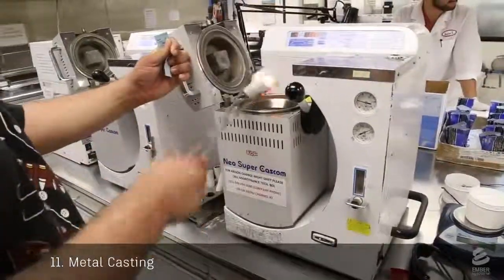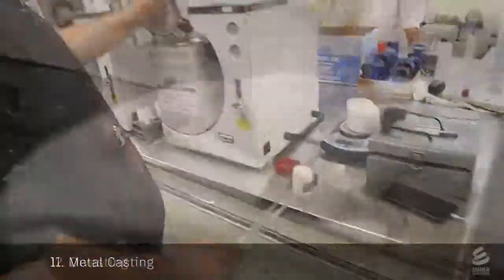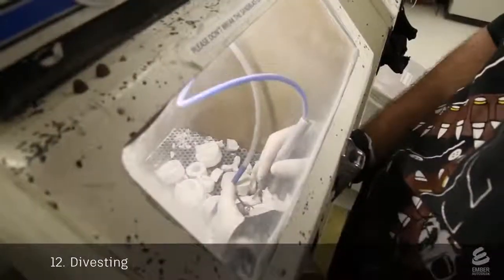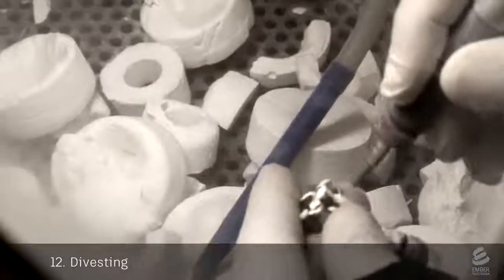The casting is removed from the machine and left to cool. In a process called divesting, a technician breaks apart the investment with a hammer and uses an air gun to remove any remaining pieces of investment.